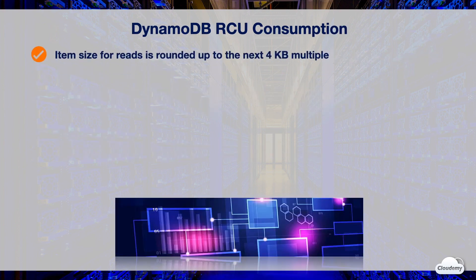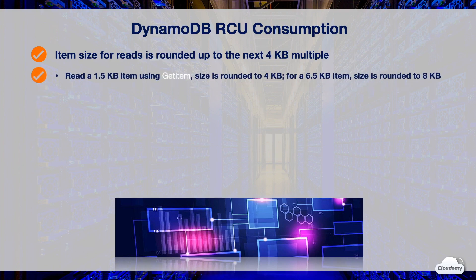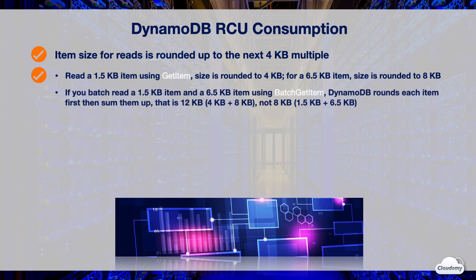DynamoDB rounds up the item size for capacity calculations. For read operations, item size is rounded up to the next 4 KB multiple. For example, when you read an item that is 1.5 KB using a GetItem request, the item size is rounded up to 4 KB. If the item size is 6.5 KB, it's rounded up to 8 KB. For BatchGetItem requests, DynamoDB first rounds up each item individually and then sums up the rounded values.